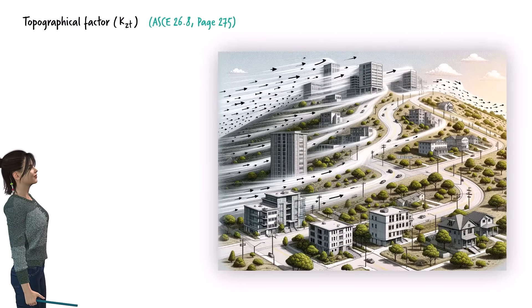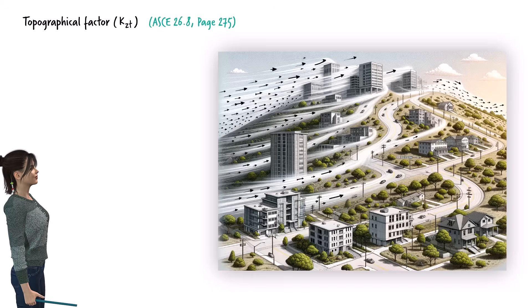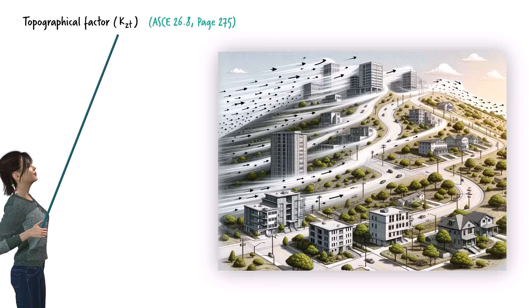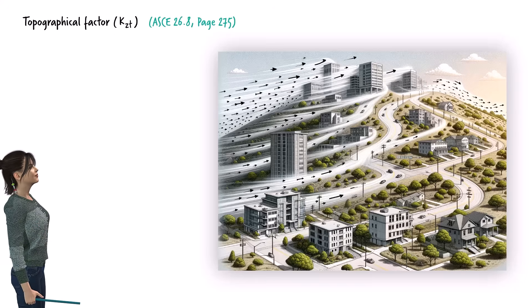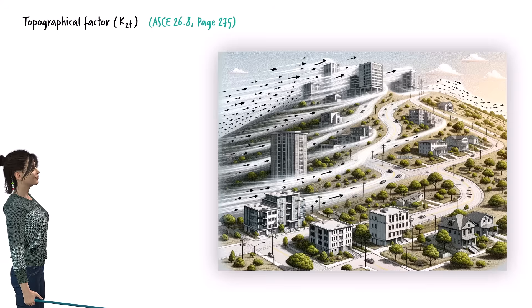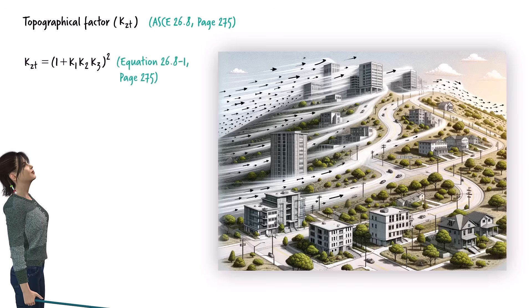Wind speed increases as it moves up a hill, significantly increasing wind pressure on nearby structures. ASCE includes a topographical coefficient, labeled K sub ZT, in the wind pressure equation to account for this increased pressure.